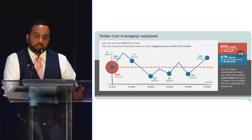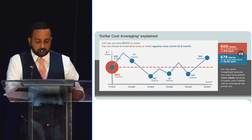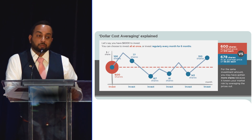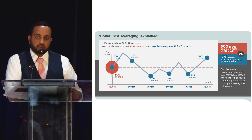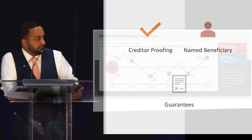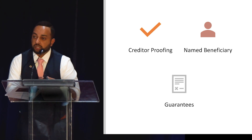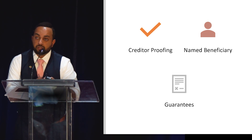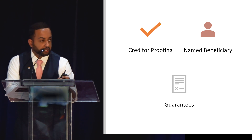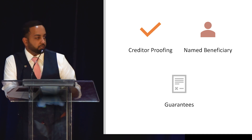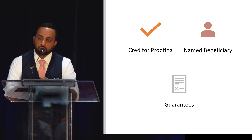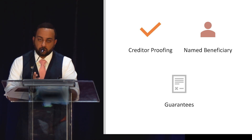Talk to your client about dollar-cost averaging. What I like to tell them is that dollar-cost averaging is a way to buy your money at a discount, and it helps their dollar stretch farther. I also like to talk about benefits of segregated funds — things we can do that banks can't, including guarantees, creditor proofing, and the ability to name a beneficiary for non-registered accounts. Then tie that all back to peace of mind, which is the benefit statement clients resonate with.